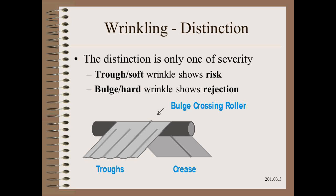In summary, the troubleshooter works in the open web span. This is where you get the most information, and where you get it sooner. Don't be blindsided by waiting until a wrinkle crosses the roller. Everything you need to know is in the open web span.